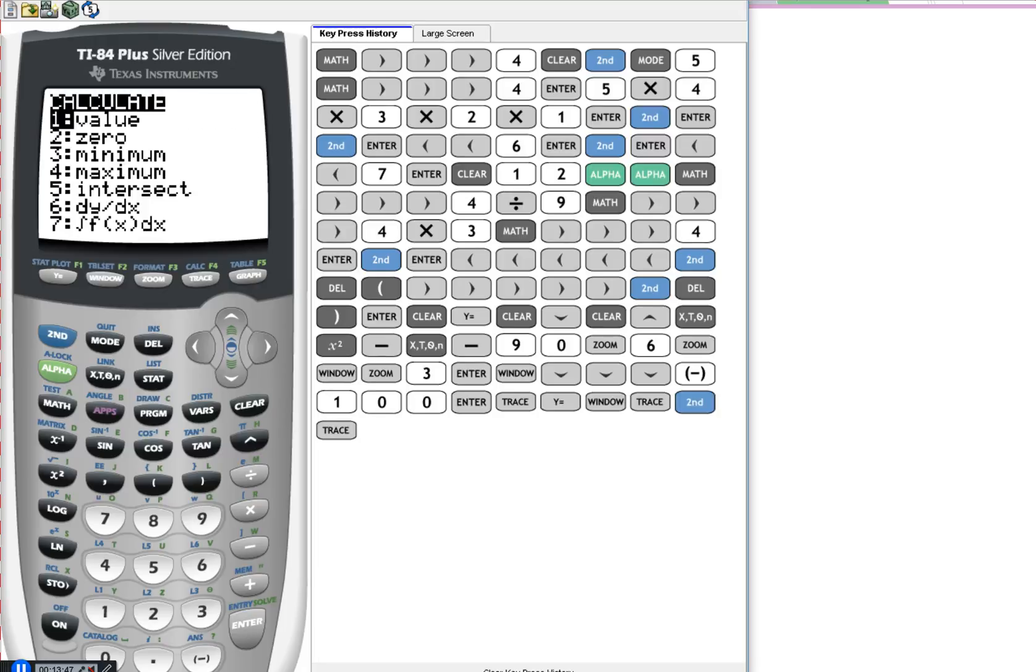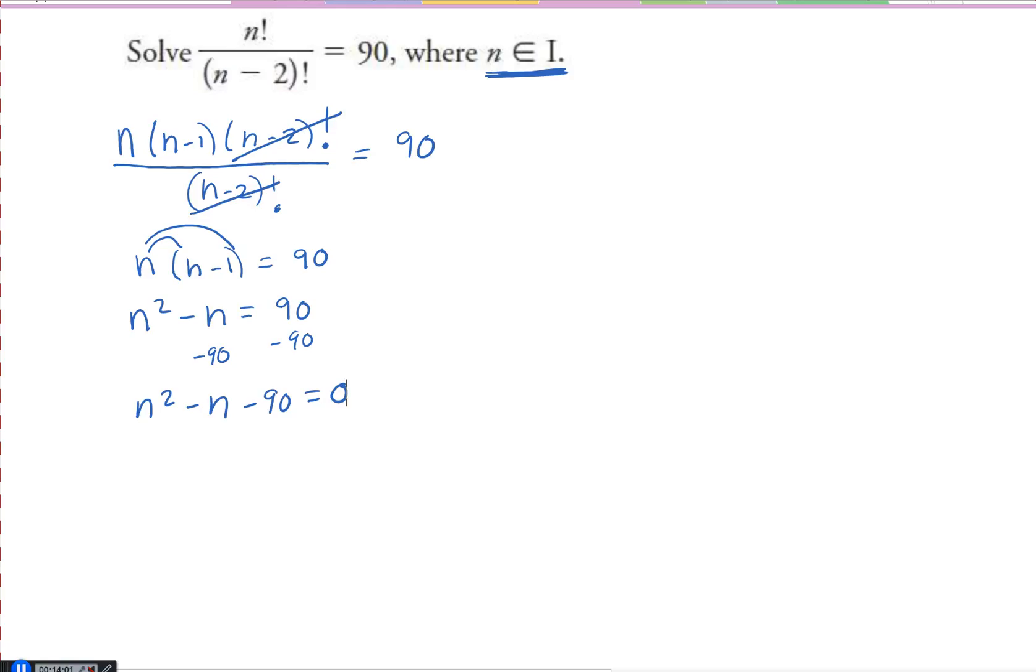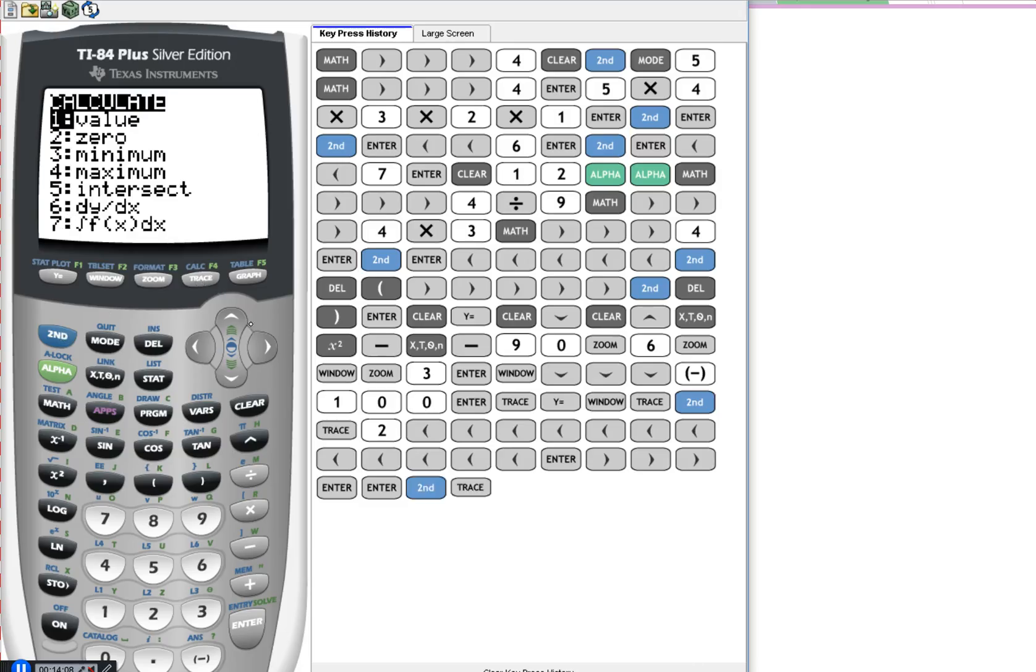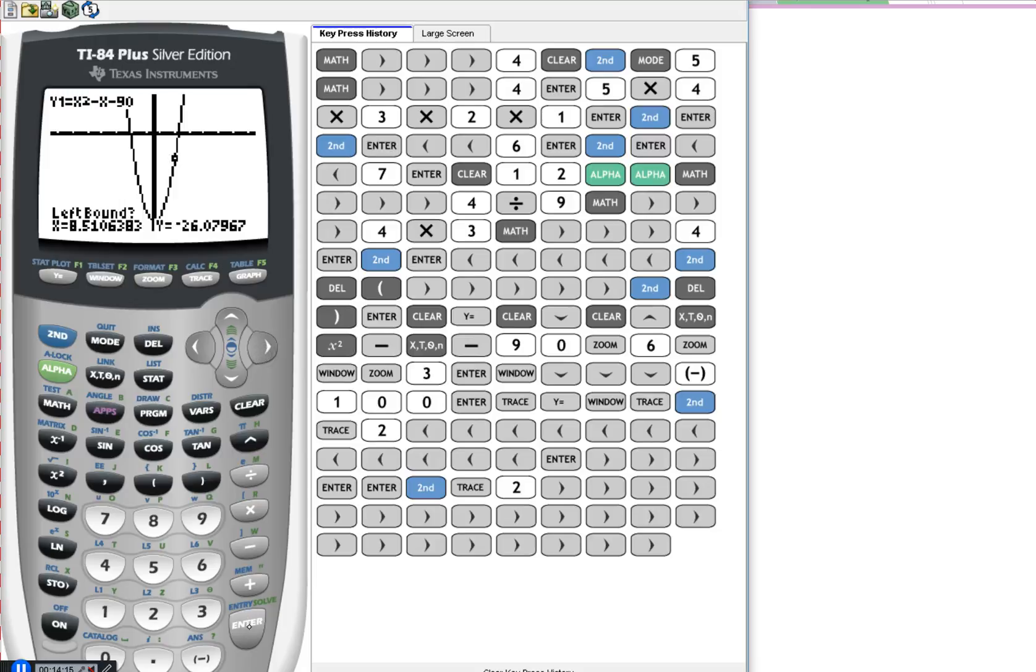So if you hit trace, you can get your graph in there. How do you find your zeros? Second, trace, and you're going to go to your zeros. You're going to go left bound, enter, right bound, enter, enter, enter again. And I've got negative 9 there. So that's one of them. Is negative 9. So n is equal to negative 9. And the other one, second, trace, zero, left bound, move over here, enter, right bound, enter, enter, enter again. You've got 10.